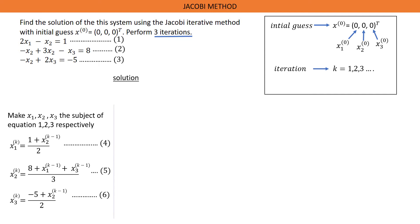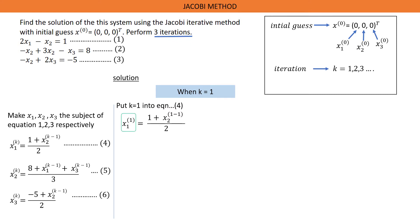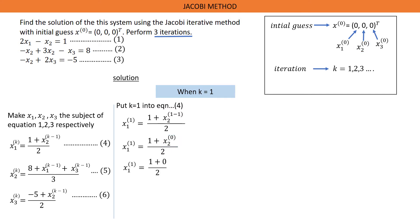Let's perform our first iteration. When K equals 1, we put 1 into equations 4, 5, and 6 wherever we see K before moving on to the next iteration. So wherever we see K in equation 4, we put 1 there. This gives us S1^(1) equals 1 plus S2^(0) all over 2. The initial guess value of S2 is 0, so we replace it with 0. Solving this gives us S1^(1) equals 1/2.